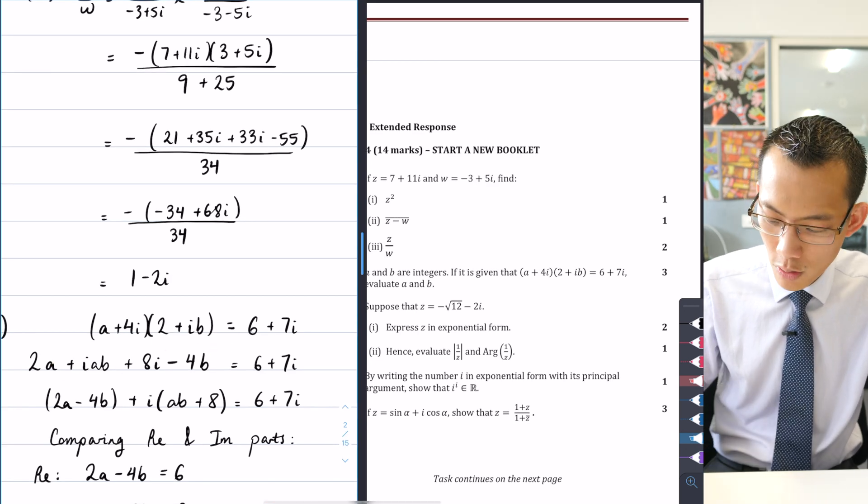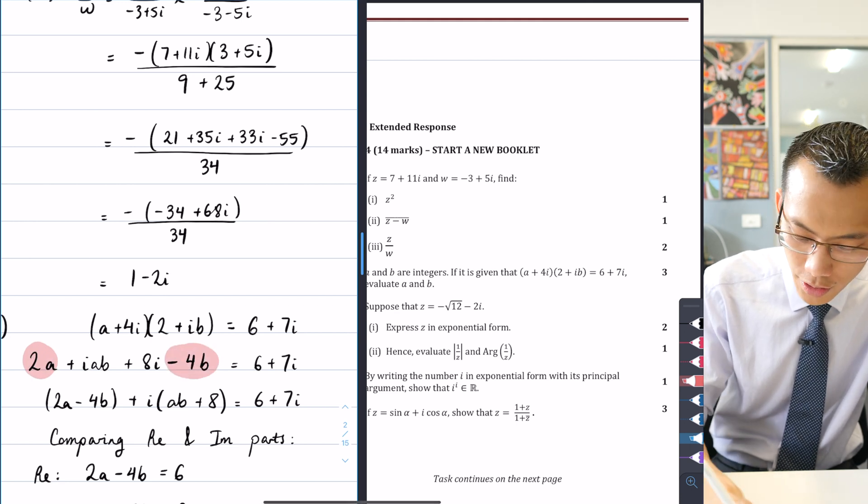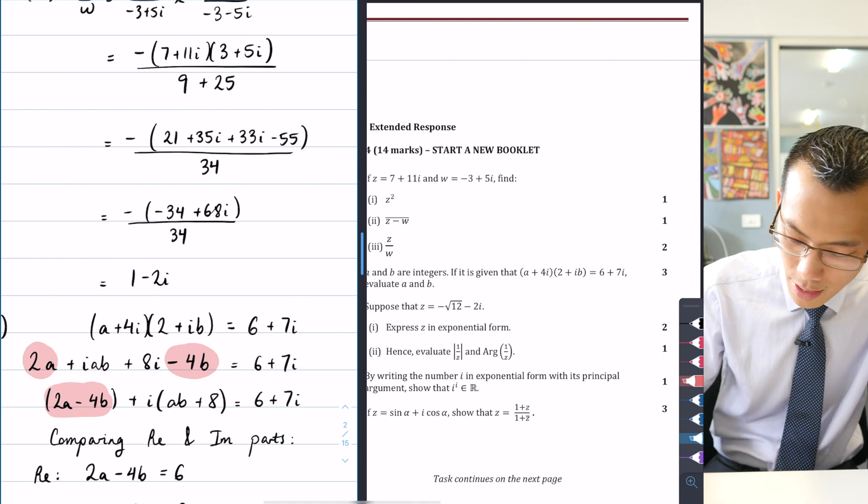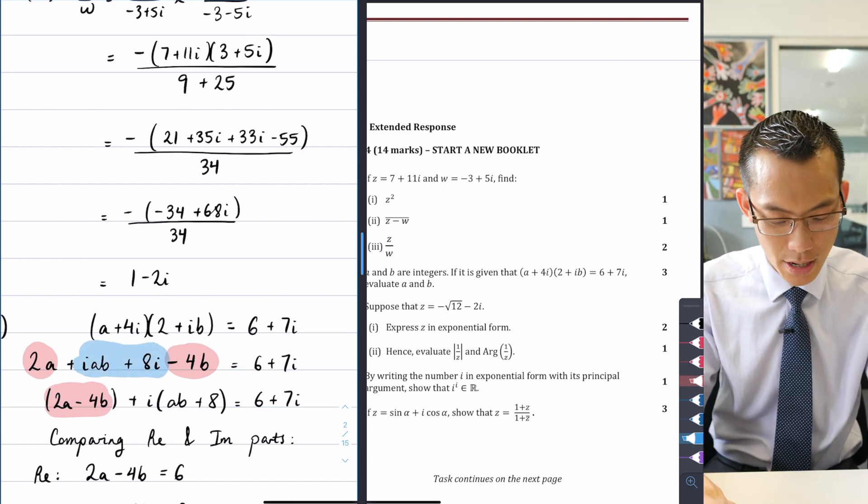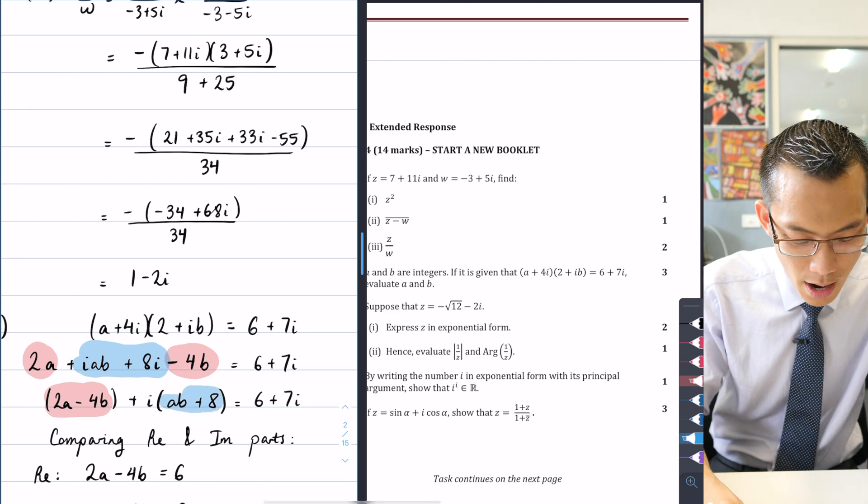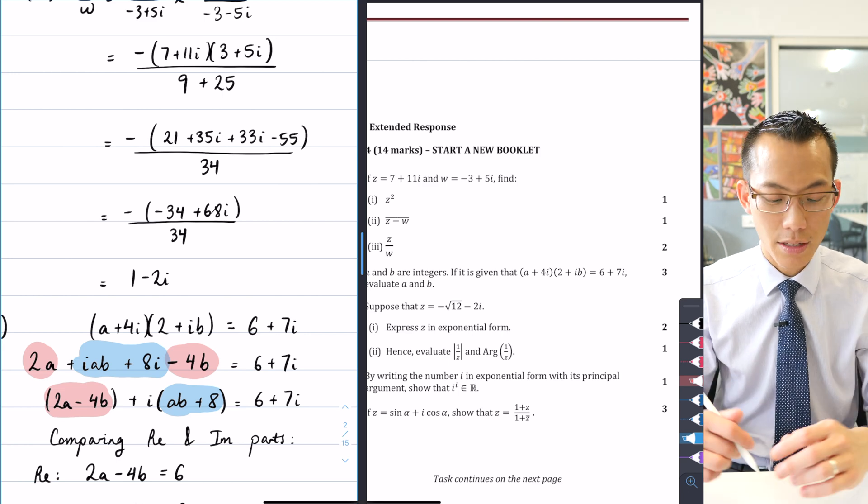So you can see I've already done that here in my working. Here's the first line of expansion, and then what I've done is I have said this is real and this is real, so I've collected them over here. And then this term, or these pair of terms rather, is imaginary, so I've factorized out the i and there's my imaginary part there. So red part's going to be 6, blue part's going to be 7.